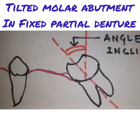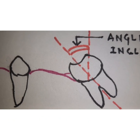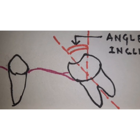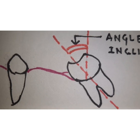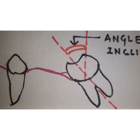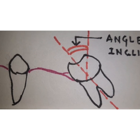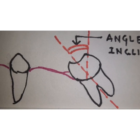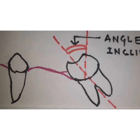Hello friends, I am Dr. Vijay Prakash and today I will be telling you about tilted molar abutment in fixed partial dentures. Tilted molar abutments are one of the very common clinical situations, especially in the lower arch, where you see a mandibular second molar or third molar drifting into the space of the missing first molar. If the missing first molar is not restored, there is always a chance that the second molar is going to mesially drift into that space, leading to inclination of these molars.